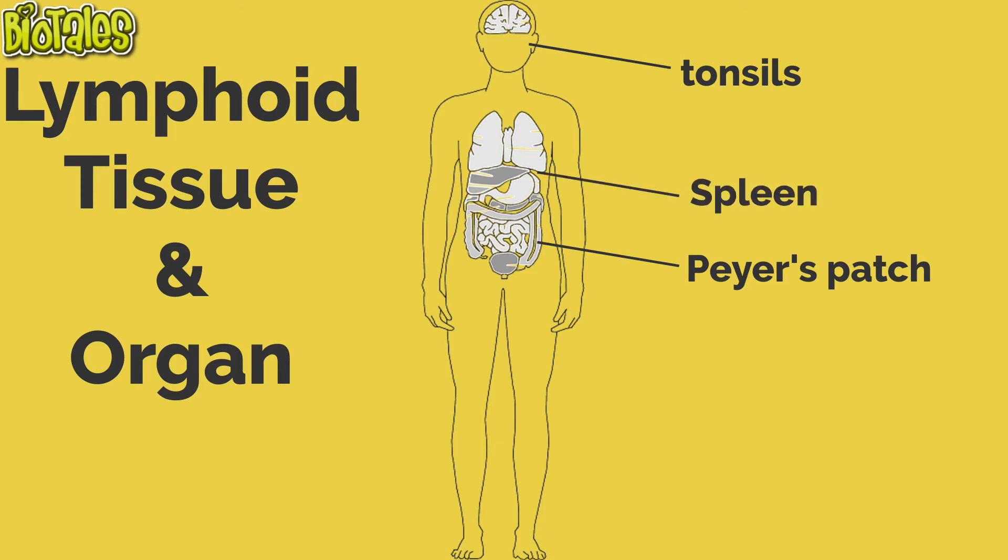Also, the spleen contains lymphocytes and macrophages that monitor the blood for microbes and secreted products such as toxins, much like lymph nodes that monitor lymph.